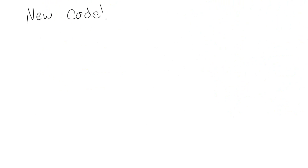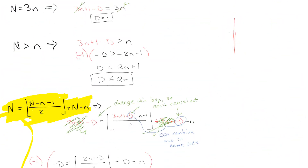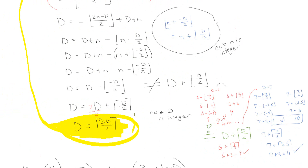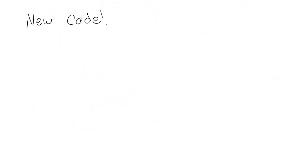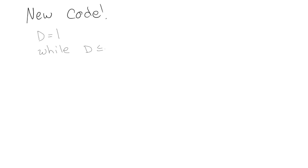Our new simplified code is: start with D = 1; while D is less than or equal to 2n, set D equal to ceiling of 3D over 2; then display the answer, which is 3n + 1 minus D. That's the complete algorithm for the modified Josephus problem shooting every third person.